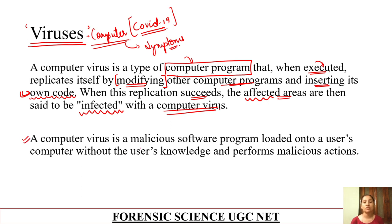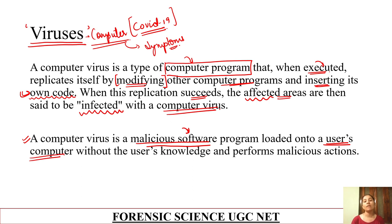A computer virus is a malicious software. A computer virus can also be a malicious software program that is loaded into a user's computer. For example, someone you dislike — you can place a virus in their computer. This malicious software will corrupt their computer and files, and whatever data is present will be destroyed. It is loaded into any user's computer with malicious intention.